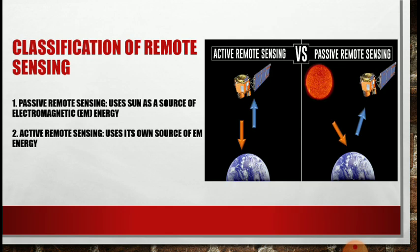Next, classification of remote sensing. Remote sensing is classified into two categories: passive remote sensing and active remote sensing. In passive remote sensing, it uses the sun as a source of electromagnetic energy, and in the case of active remote sensing, it uses its own source of electromagnetic energy.